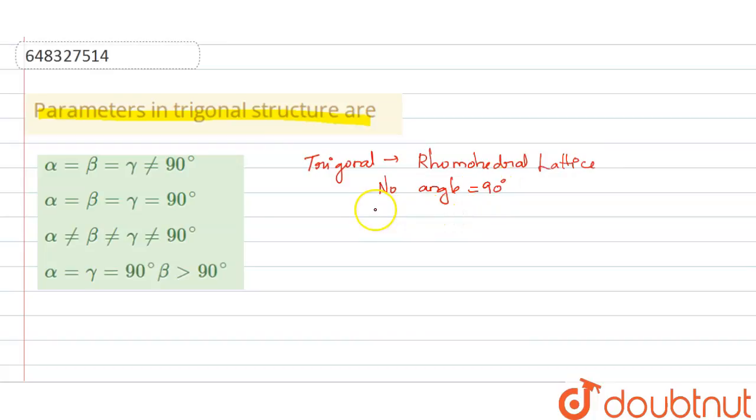But all the sides, that is alpha, beta, and gamma, are of equal length. This is known as the rhombohedral lattice, which is also known as trigonal. Thus, requiring only one lattice parameter, and the three angles are equal, that is alpha, beta, and gamma.